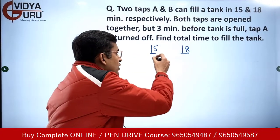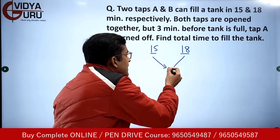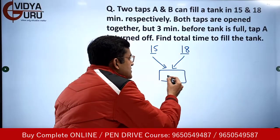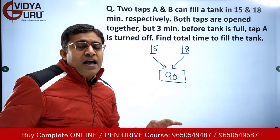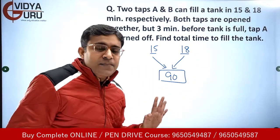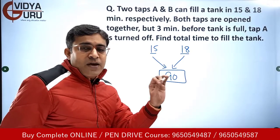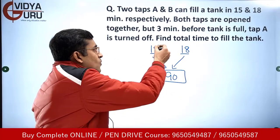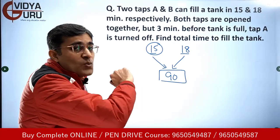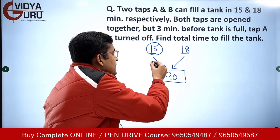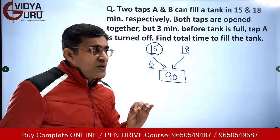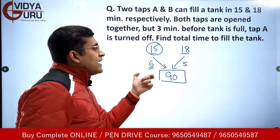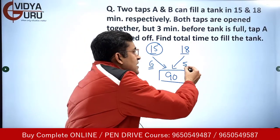The LCM of the time taken gives you the total work that needs to be done. The LCM of 15 and 18 is 90 units — so 90 units is the total work, which means filling the tank. In one minute, tap A does 6 units of work (since 15 × 6 = 90). Similarly, tap B does 5 units per minute (since 18 × 5 = 90).